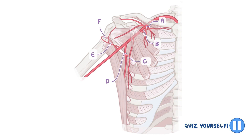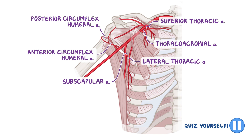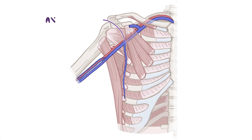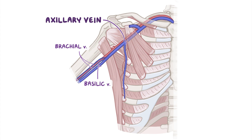Now that was a lot of info. Take a second to pause the video and see if you can label the branches of the axillary artery before we move on. Now let's move on to the axillary vein. The axillary vein is formed by the union of the brachial veins and the basilic vein at the inferior border of the teres major. It ends at the lateral border of the first rib where it turns into the subclavian vein.